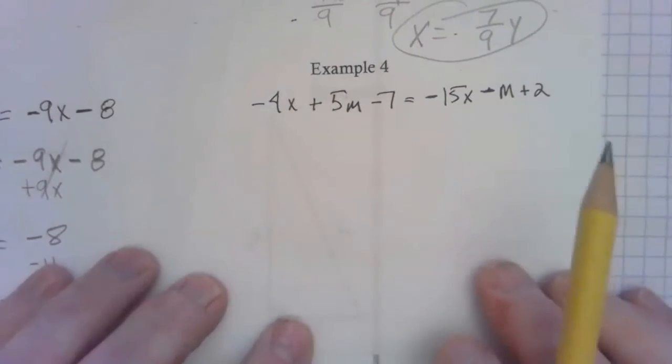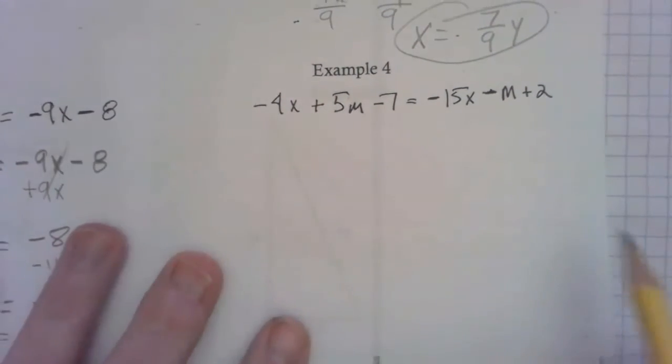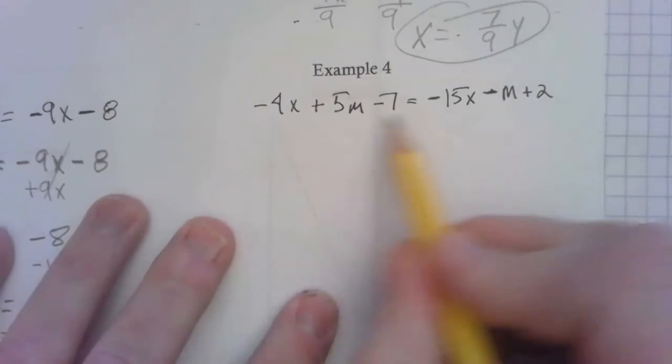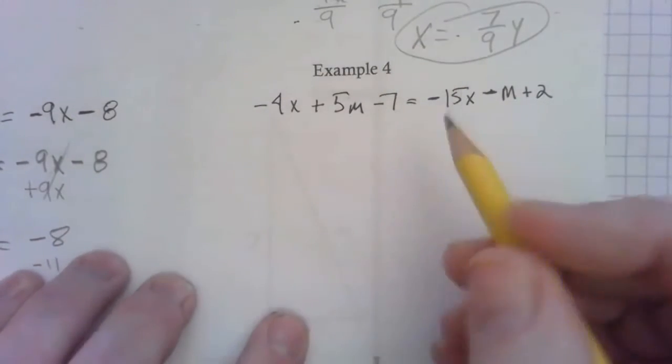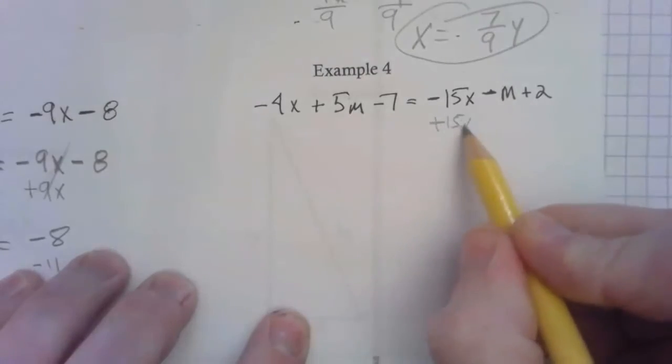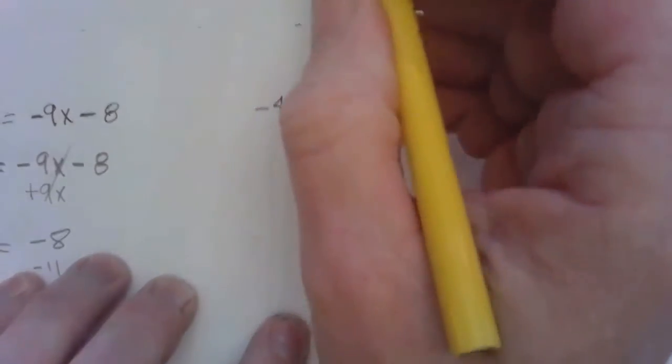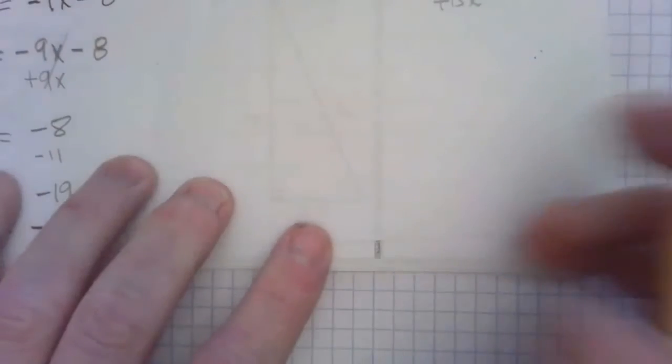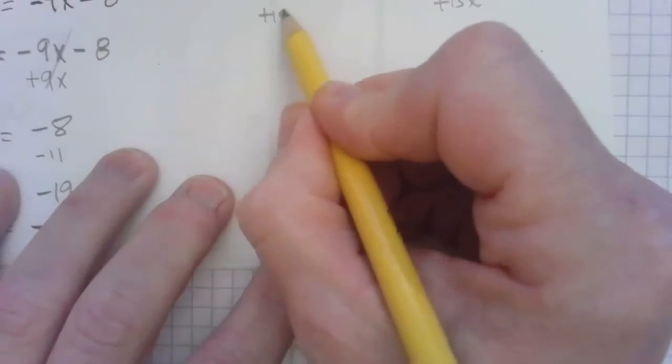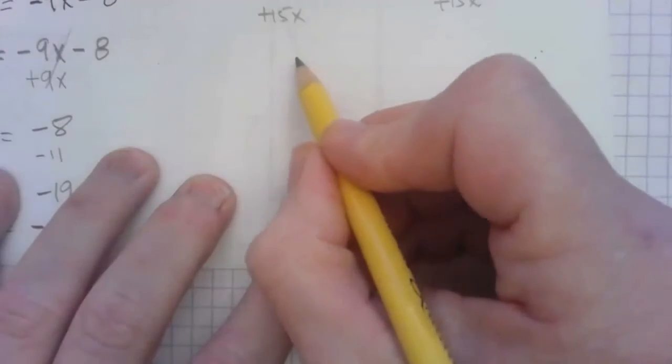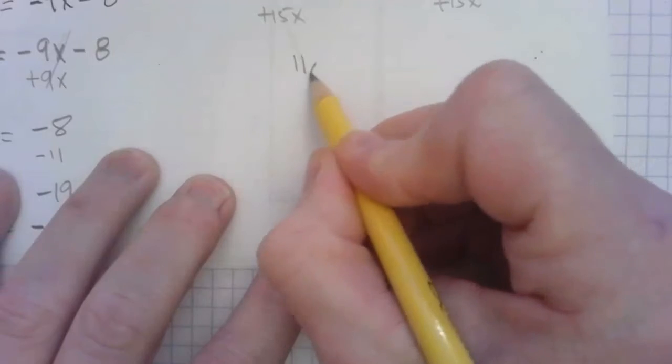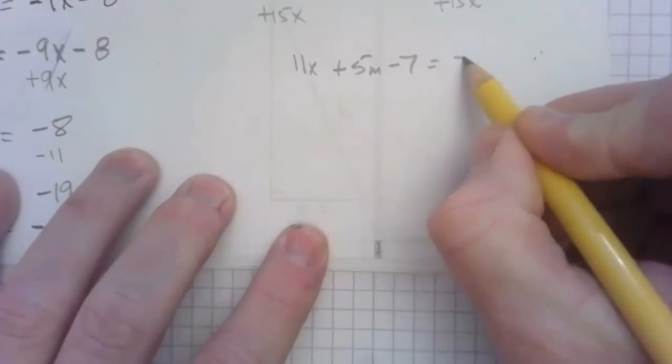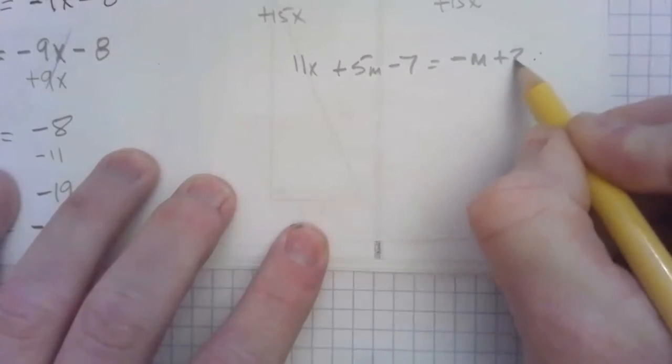All right, so even more things to complicate matters here. But if we're patient, I think we'll be all right. Let's take care of getting the x. I've generally just put the x's on the left if I can. So I'm going to add 15x here. Once again, solving for x because that's what the instruction said at the beginning. Add 15x here, so that's going to be 11x plus 5m minus 7 equals negative m plus 2.